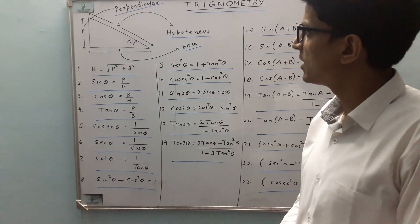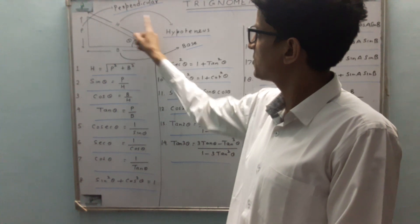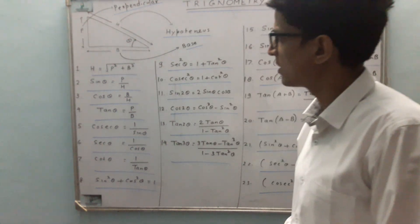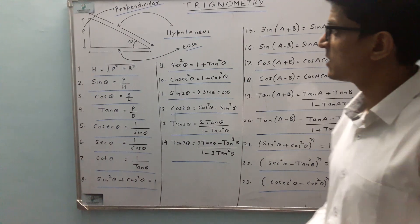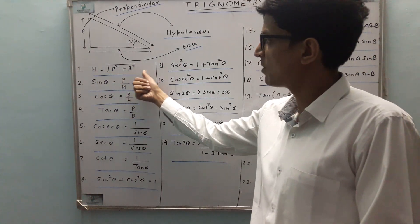So we have a right angle triangle in which b is the base, h is hypotenuse, and p is the perpendicular. There are certain standard results. The first result is h is equal to square root of p squared plus b squared.